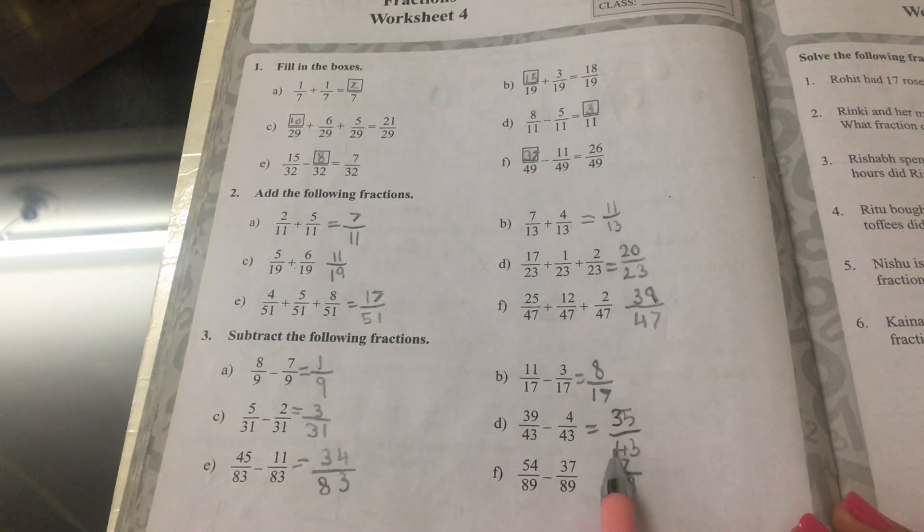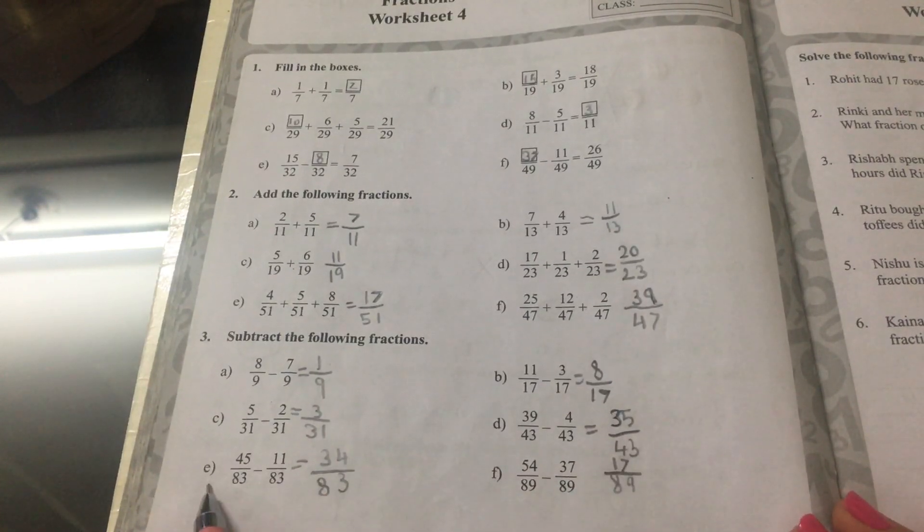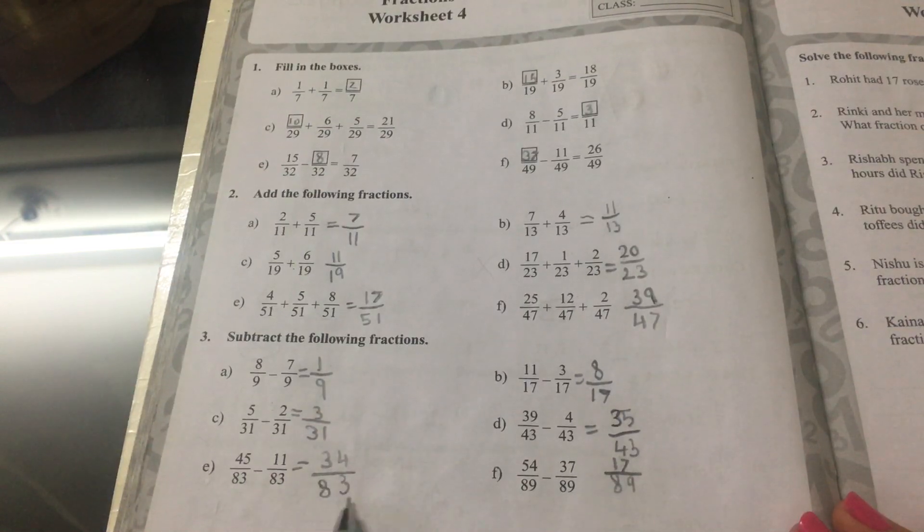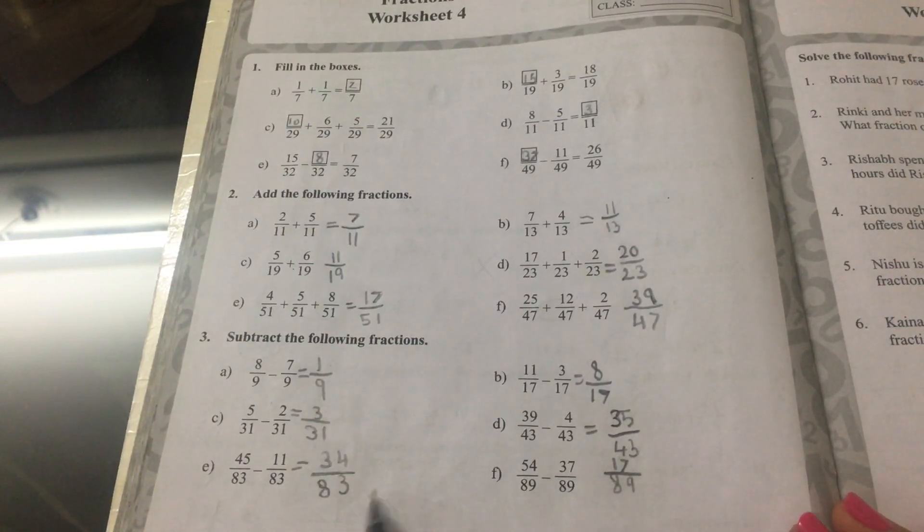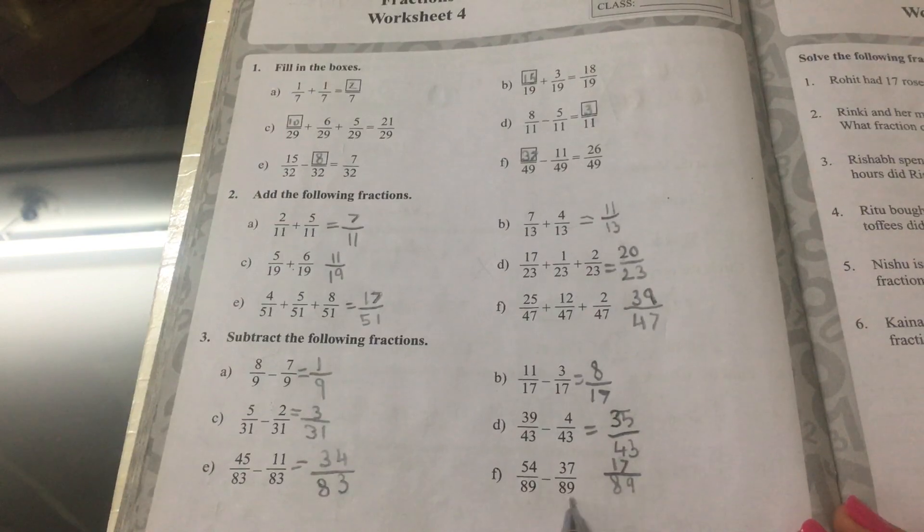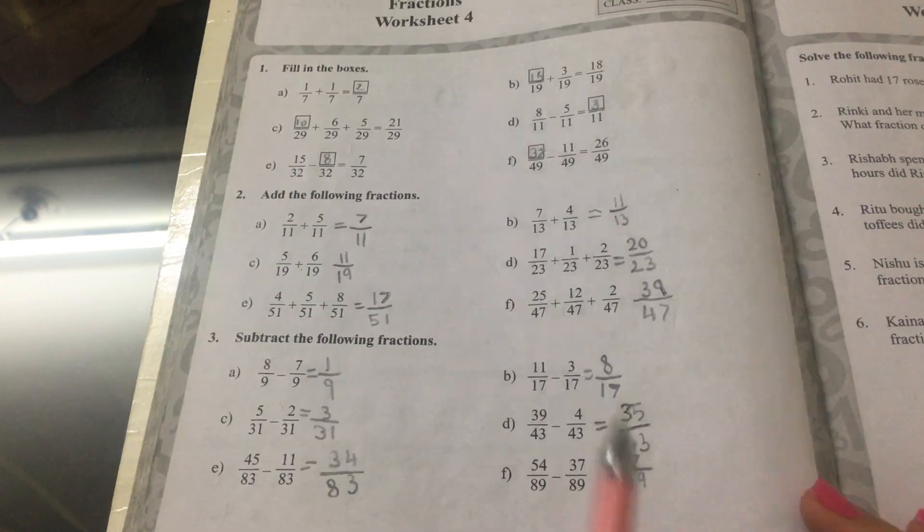D is equal to 35 fifty-thirds. E is equal to 34 eighty-thirds, and F is equal to 17 eighteenths.